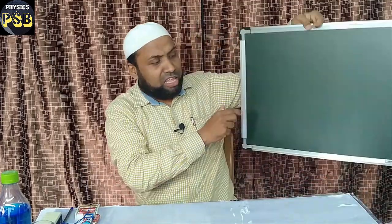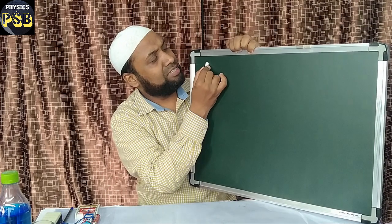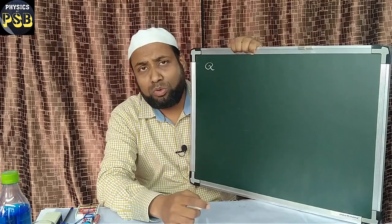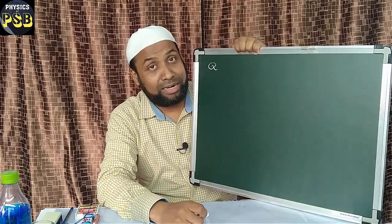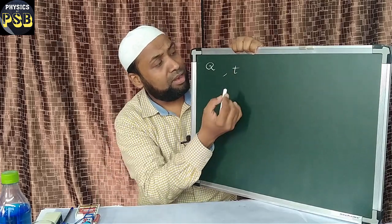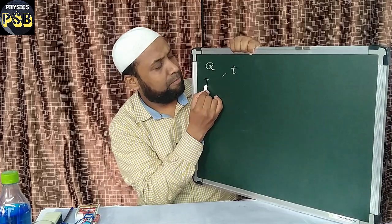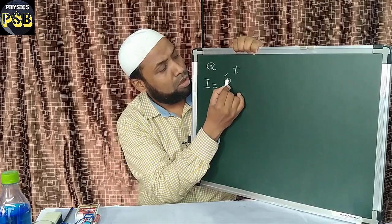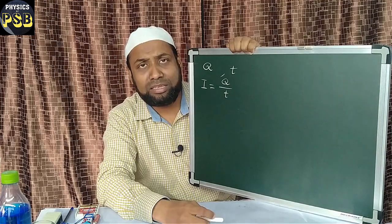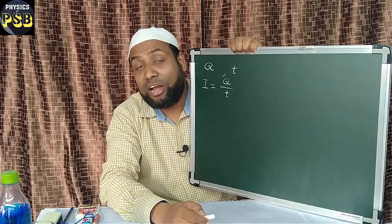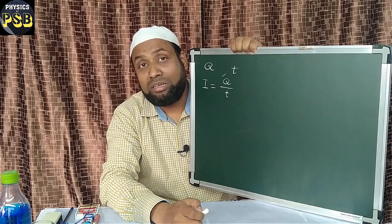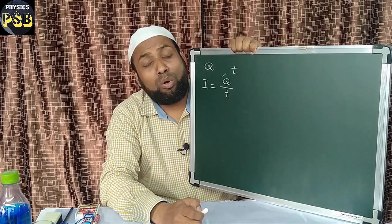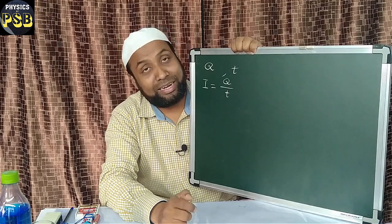Now I will derive an expression for electric current. If I consider Q as the charge flowing through the cross-sectional area of a conductor in a time T, then current I can be mathematically written as Q upon T. It means that electric current is the rate of flow of charge through the cross-sectional area of a conductor.